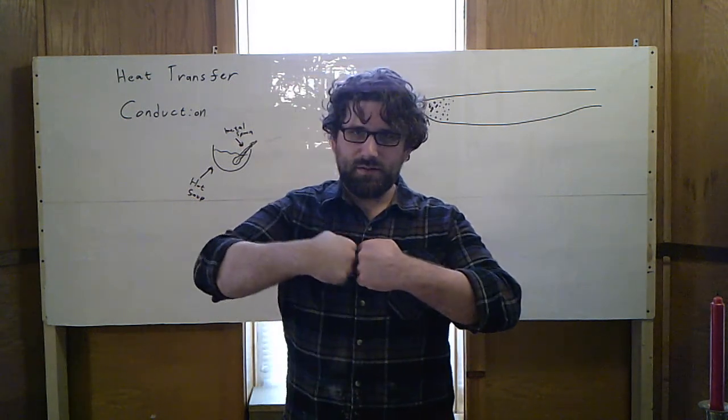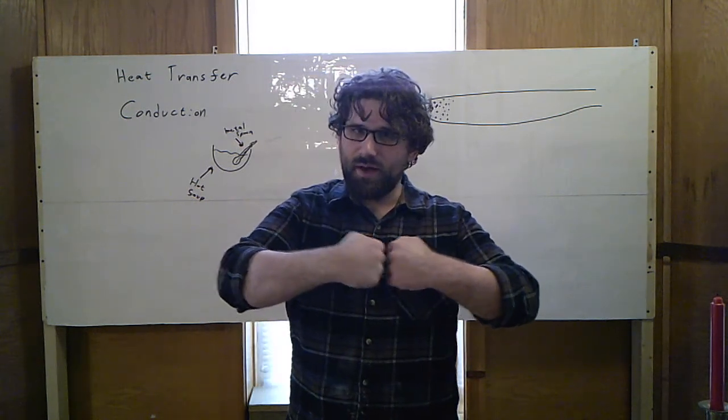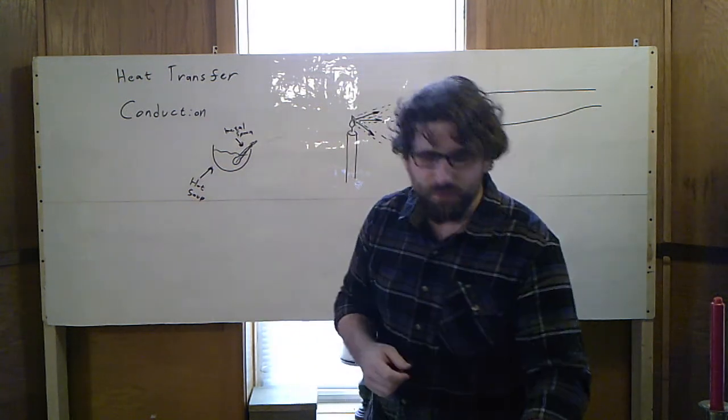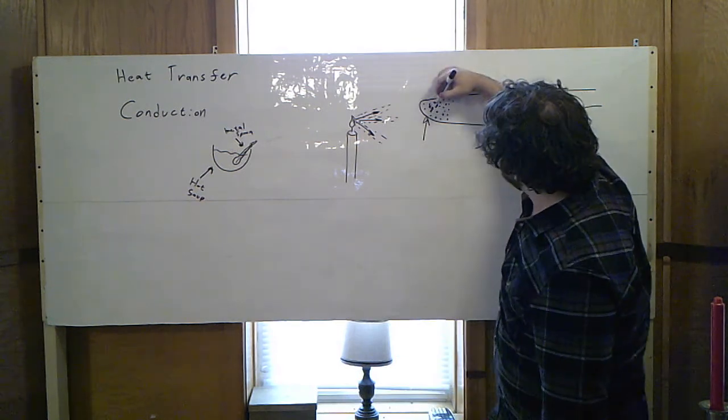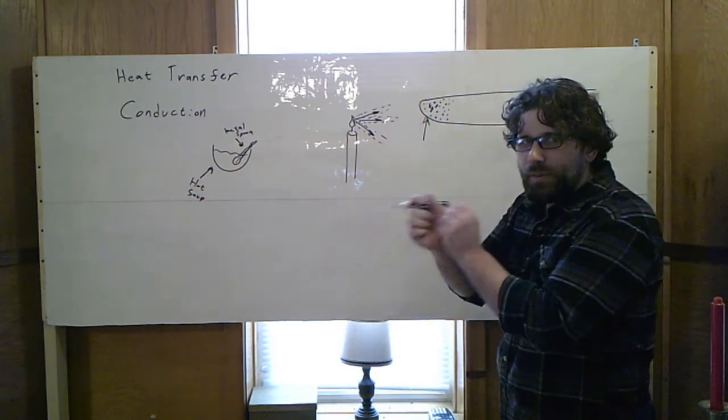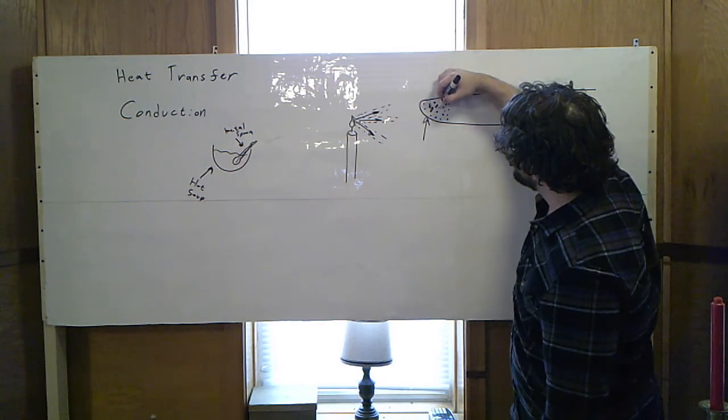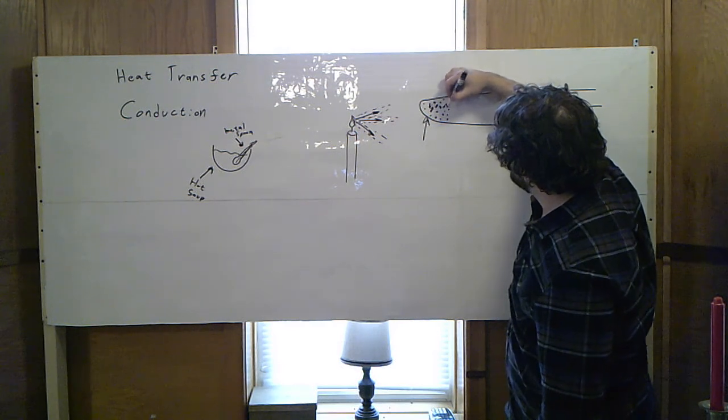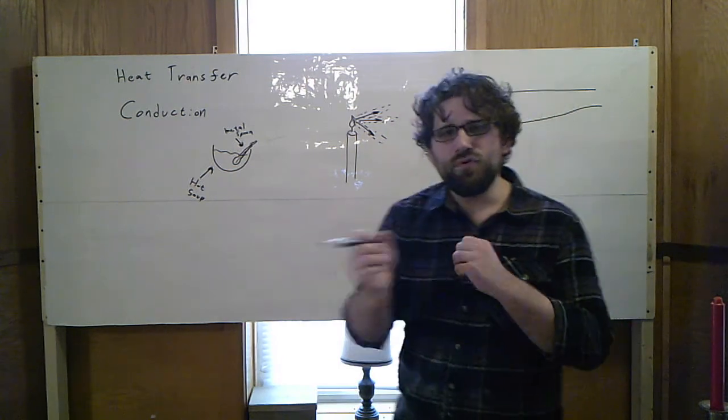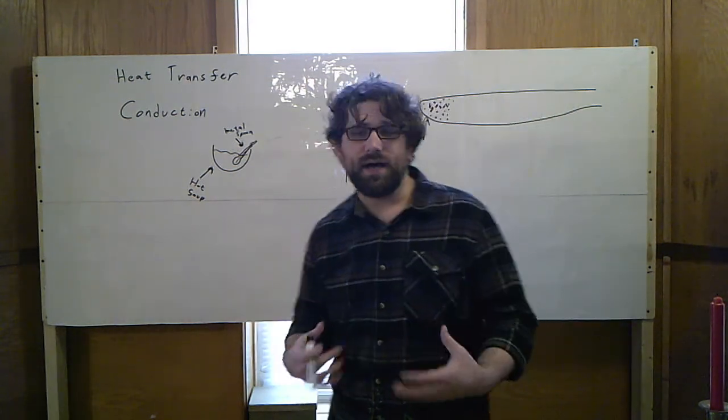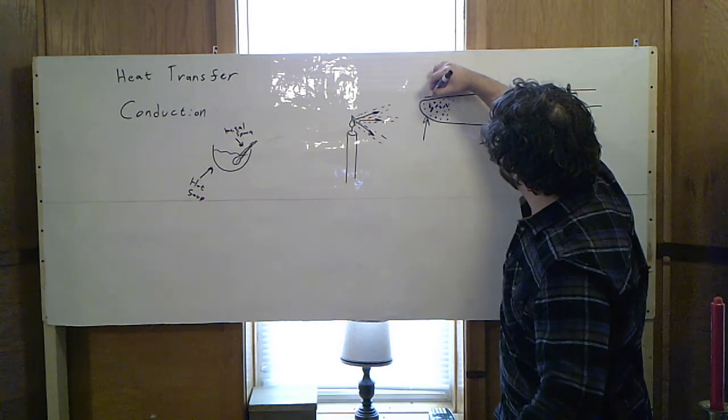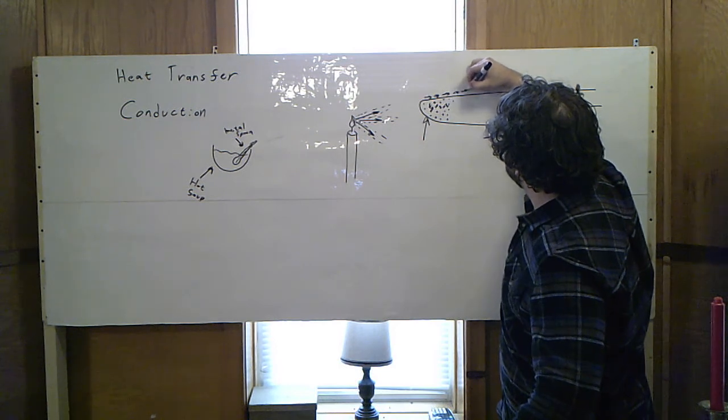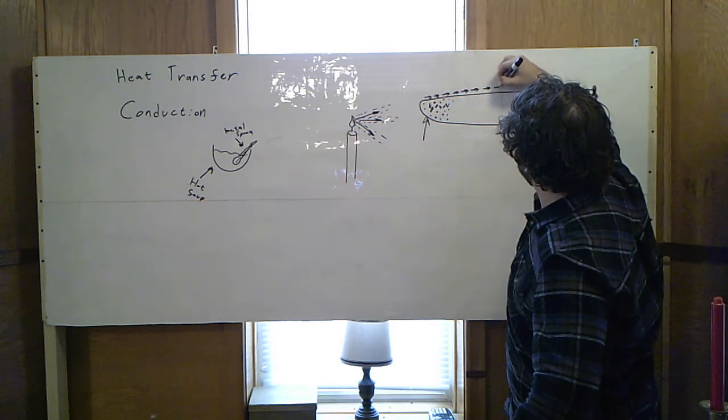As these little guys start vibrating around, they start to bump into their neighbors. I start moving this hand and it's going to steadily move my other hand, and now they're both moving, and then this hand is going to hit the hand next to it, so on and so forth. As these molecules, as these tiny little atoms are bumping into each other, they're going to transfer some of that energy over. But because there's so many and they can't move very far, it takes a long time. It has to steadily transfer from one particle to another and work its way down the blade.